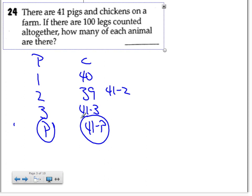Well, I know that my pigs, for each pig has four legs and my chickens have two legs, which is 41 minus P are my chickens. And when I add them up, I have 100 legs on my farm.